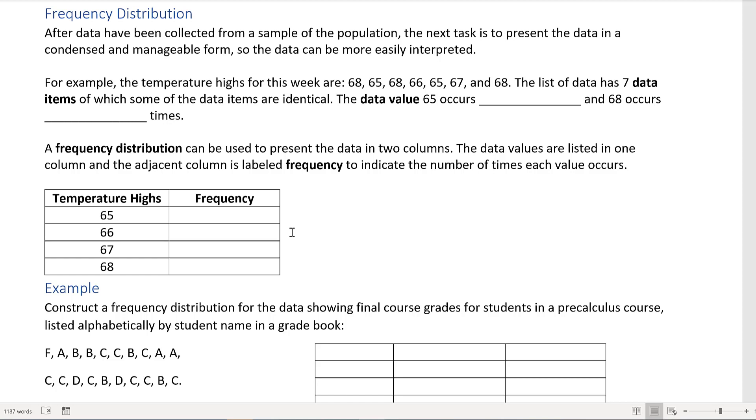For example, the temperature highs for this week are 68, 65, 68, 66, 65, 67, and 68. The list of data has seven items, of which some are identical. For example, 65 occurs twice and 68 occurs three times.